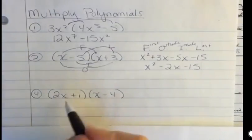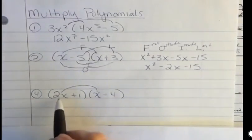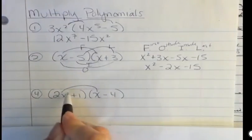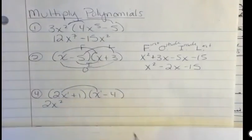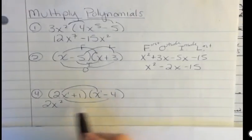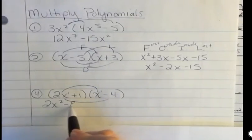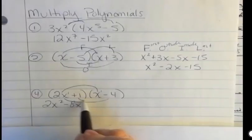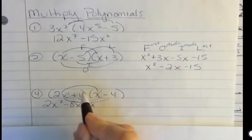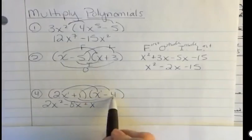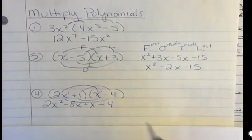Using the FOIL method here, I'm going to do first 2x times x. This is like first power, right? So I'm adding 1 plus 1 to get 2x to the second power. My outside, 2x times negative 4, negative 8x. My inside, 1 times x is x. And my last, positive 1 times negative 4 is negative 4.